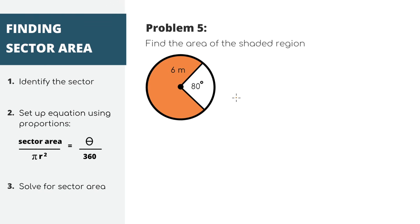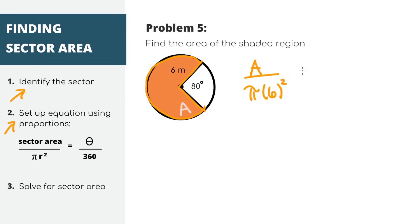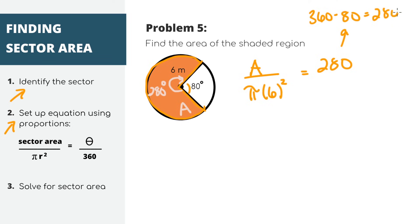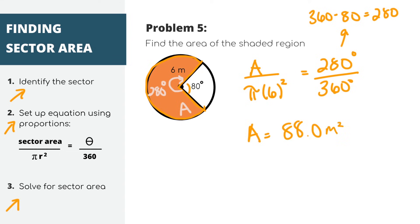For our next problem, again we have the same circle, but we're asked to find the area of this larger sector. Let's set up our equation. We're trying to find the sector area A over the total area πr². This is proportional to the angle measures. Our angle measure is 280 degrees, because 360 minus 80 equals 280. Putting that over 360 and solving for area, we'll get about 88 meters squared for our answer.